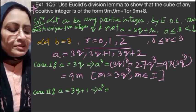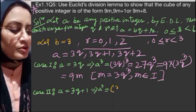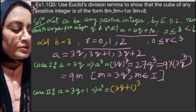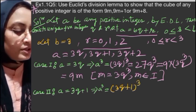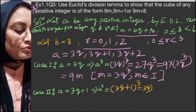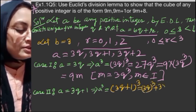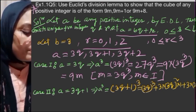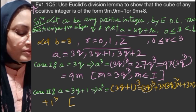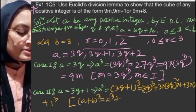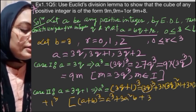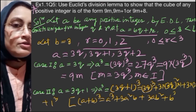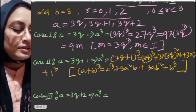Case II: If a equals 3q+1. Then (3q+1)³ equals (3q)³ plus 3(3q)²(1) plus 3(3q)(1)² plus 1³. The formula I'm using is (a+b)³ equals a³ plus 3a²b plus 3ab² plus b³.